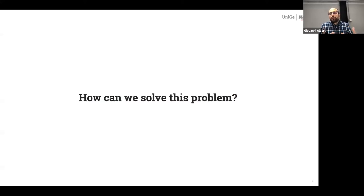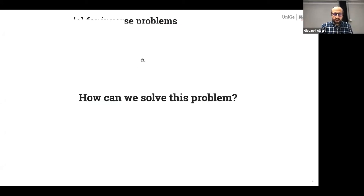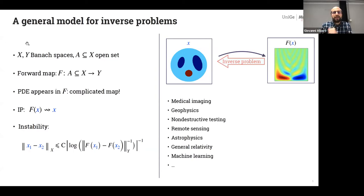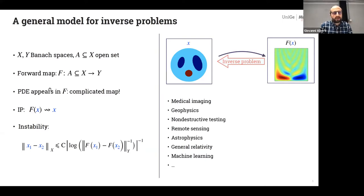The question is how to overcome this problem. The theory of regularization addresses these issues in inverse problems. Here we discuss one approach. Let me first present a general model for inverse problems, because those ideas can be applied to more general settings. Basically, fix two Banach spaces X and Y — X is the signal space where the unknown lives, and Y is the data space. A is an open set where the forward map F is defined; before, F was just the Neumann-to-Dirichlet map. The PDE often appears in F, making it a complicated, highly nonlinear map.